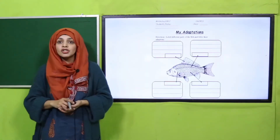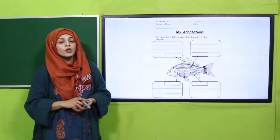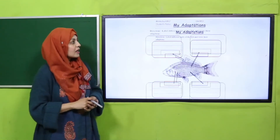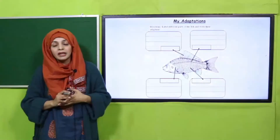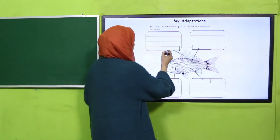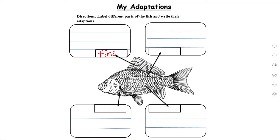Now is the time for practice. A worksheet number 12 will be provided to you by your teacher. Write down your name and your class at the top. Then comes 'My Adaptations' — label different parts of the fish and write their adaptations. Aapko fish ke upar different arrows nazar aa rahe hain, aapne unhe label karna hai aur batana hai ke how they are adapted to an aquatic habitat. Let me do the first one for you: Fins — these are the fins; they help the fish in swimming.